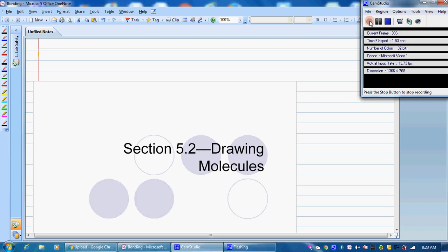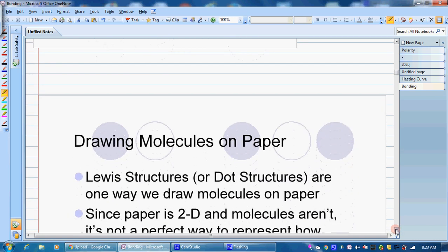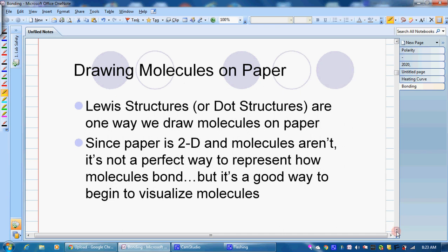In this section, we're going to start tying together what we did last chapter with our Lewis dot structures and how we actually draw these molecules correctly so they fit together and use the number of valence electrons they have available to make bonds.